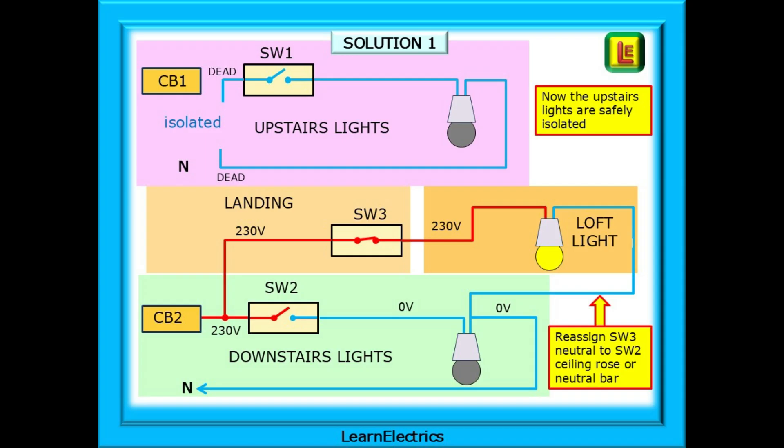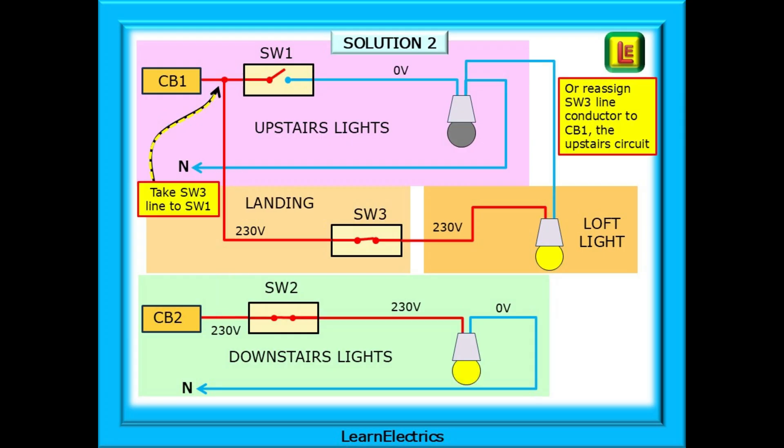There are a couple of solutions to this problem. Two ways of making the installation safe. Reassign SW3 neutral to SW2 ceiling rows or to the neutral bar. Now SW3 belongs entirely to circuit breaker number 2 and the upstairs lights can be safely isolated. Whatever happens with the loft light is not going to affect the upstairs lighting circuits.